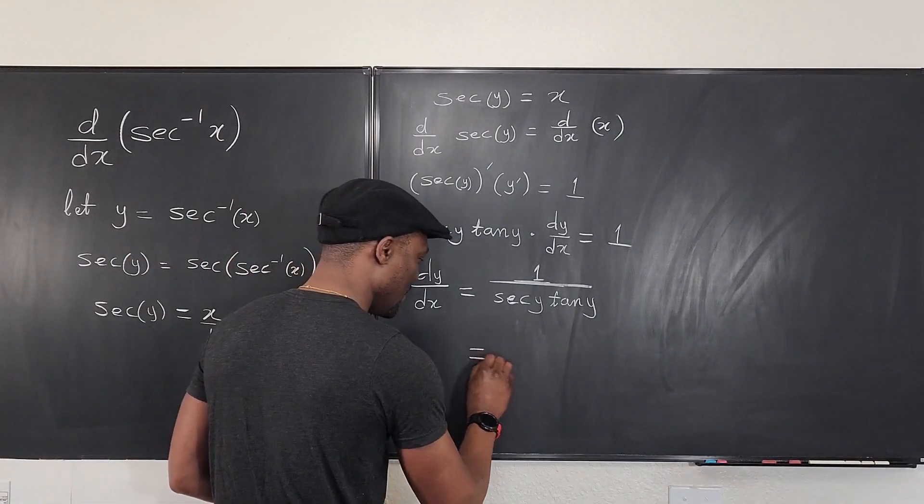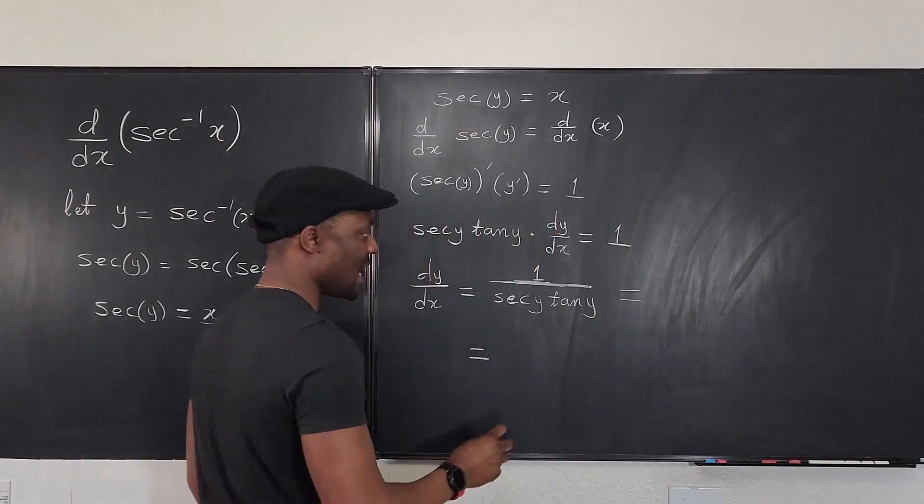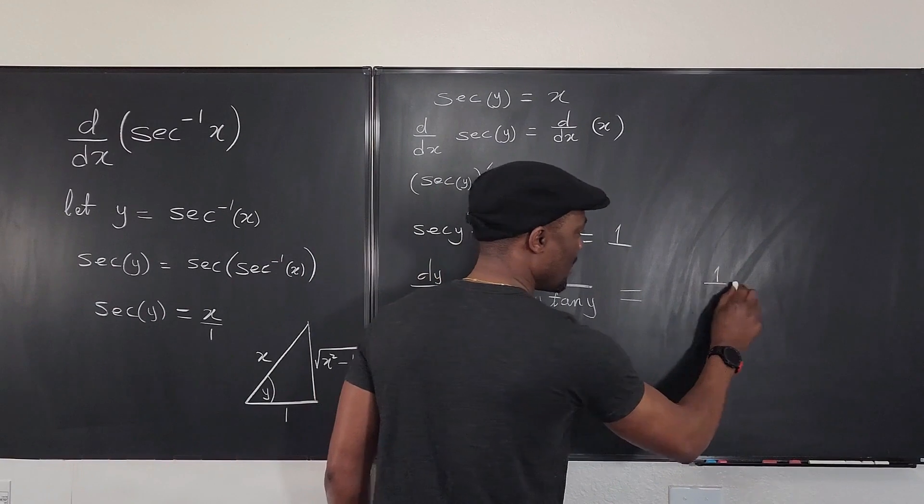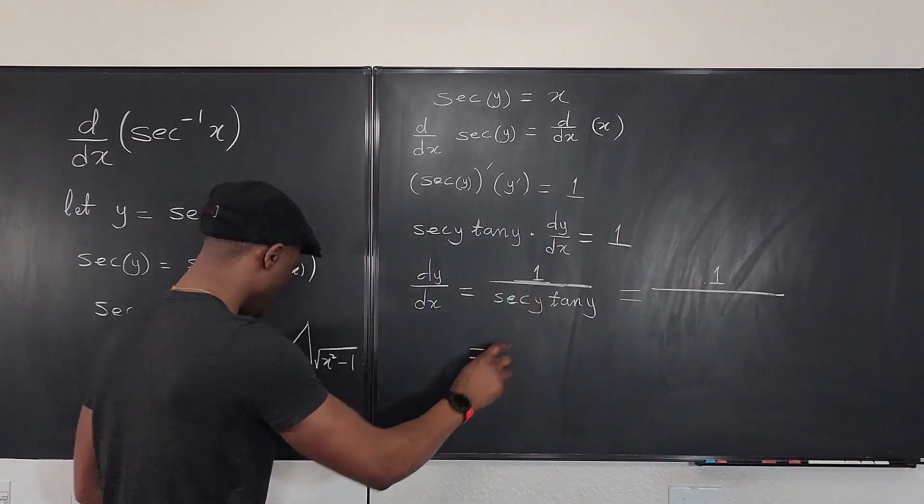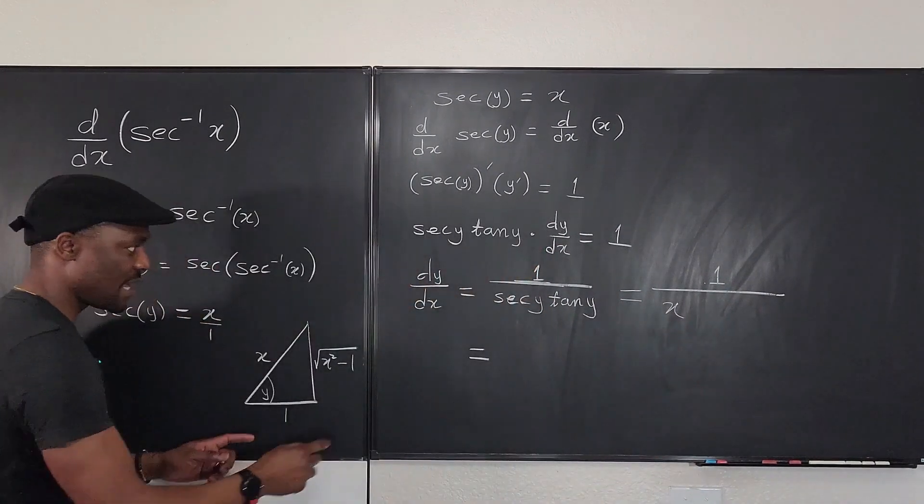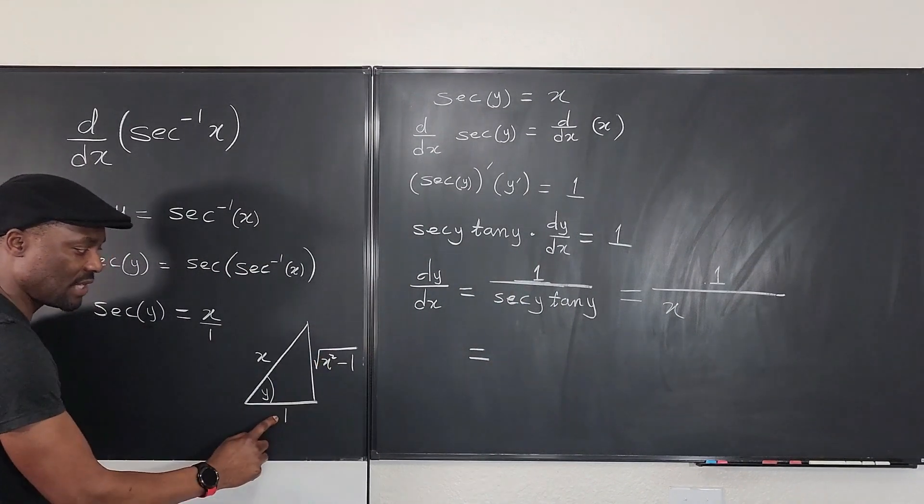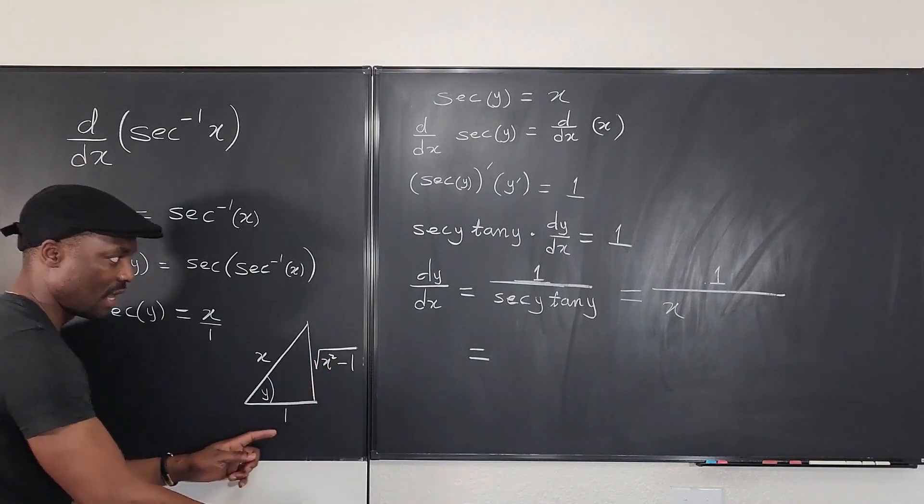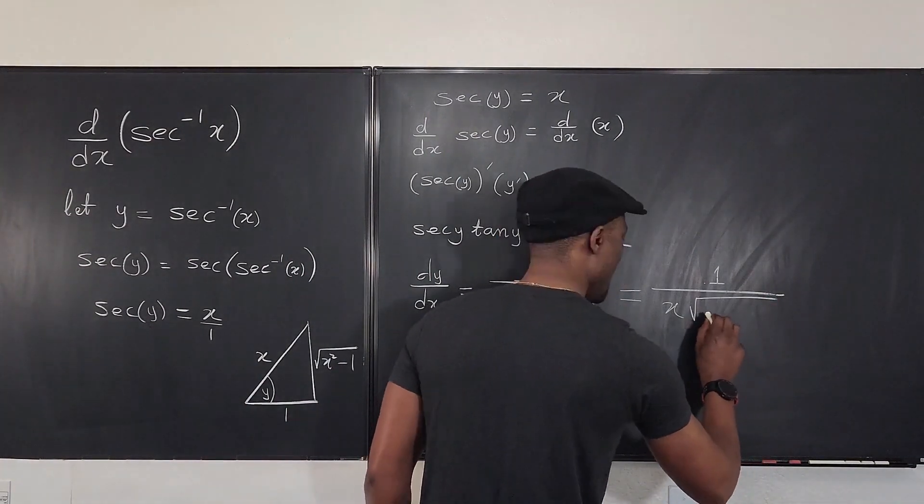So you have—let's write it here. So dy/dx is going to be one over, what would this be? Secant y is x, and what is tan y? Go here—what is tangent? Opposite over adjacent. So it's just this over one, which is going to be this: the square root of x squared minus one.